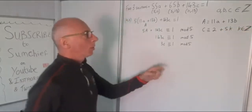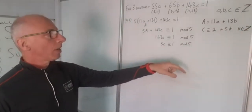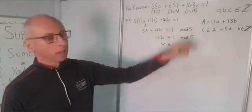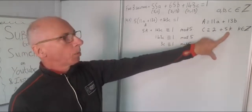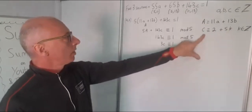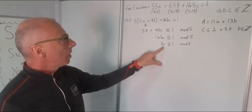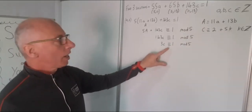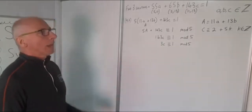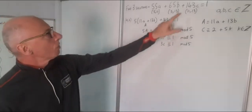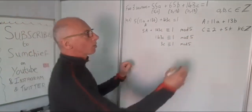So if I put in a 7, 3 times 7 is 21, that's congruent with 1 mod 5. Same with 12 and any other number you want to choose. You can even go into negative numbers and put K as minus 1, so then C equals minus 3, and 3 times minus 3 is minus 9, which is congruent with 1 mod 5. So now I'm going to rewrite this equation and for K equals 0, I'm just going to plug in C equals 2.